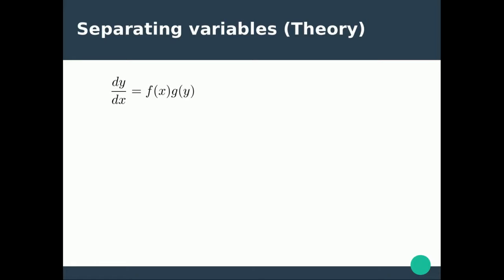So let's look at the theory of what's going on. In this first one we've got dy/dx equals a function of x multiplied by a function of y. It might turn out that they might be all mixed up but we might be able to factorize them out to get them into this form.